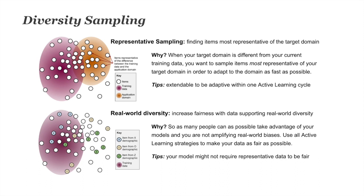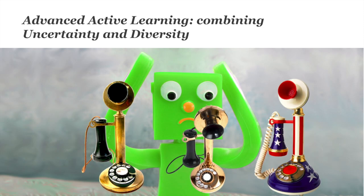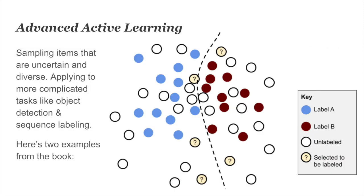Most methods for successful active learning combine uncertainty sampling and diversity sampling. Uncertainty sampling alone will tend to pick items that look too much like each other, and diversity sampling alone will pick items too far from the decision boundary. Ideally you want a combination that samples items close to the current decision boundary but also far from each other — like these five example items here. I give a dozen or so examples of this in my book.